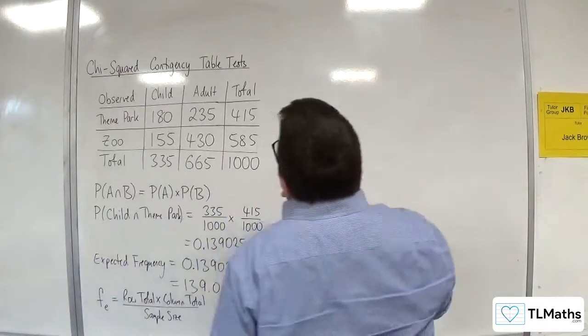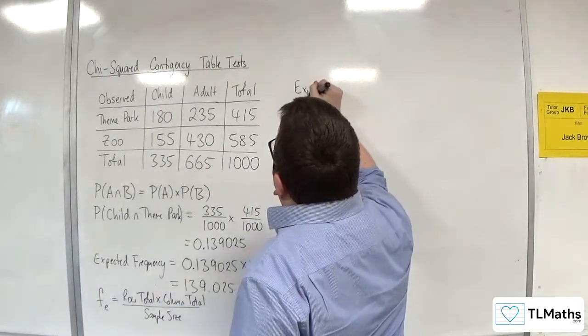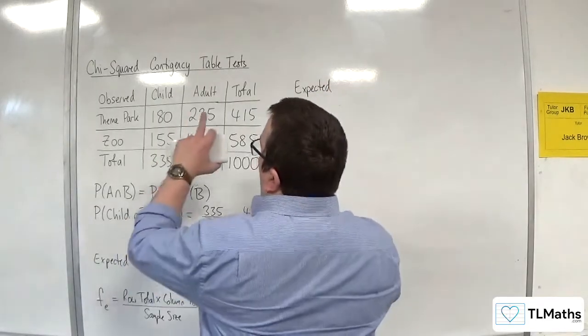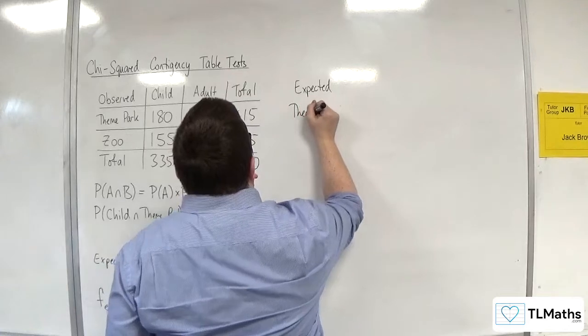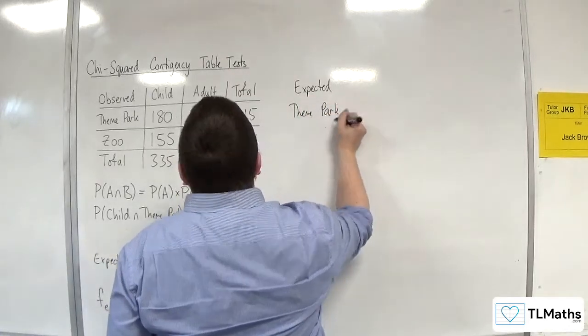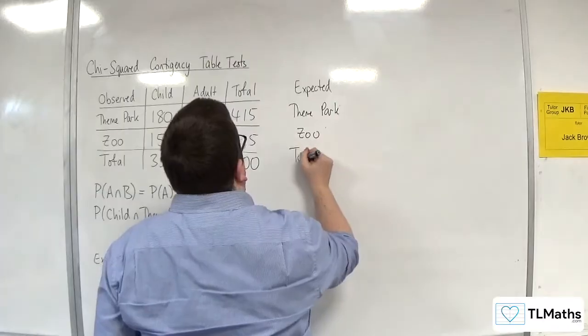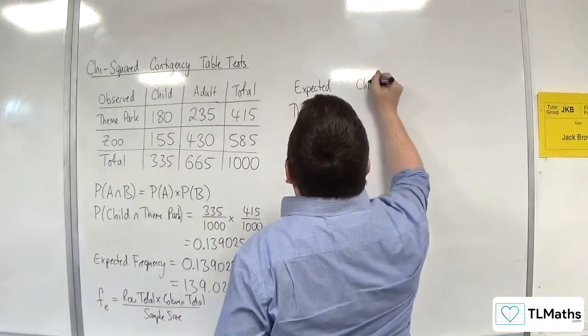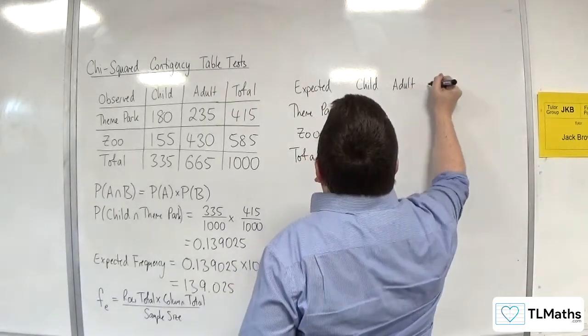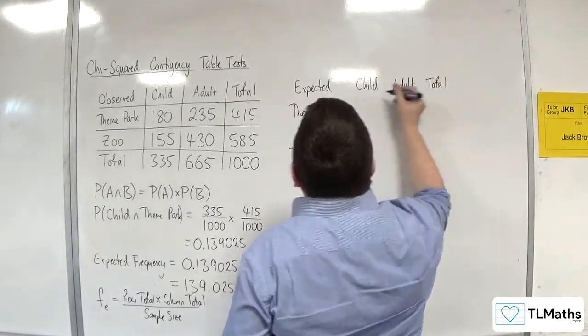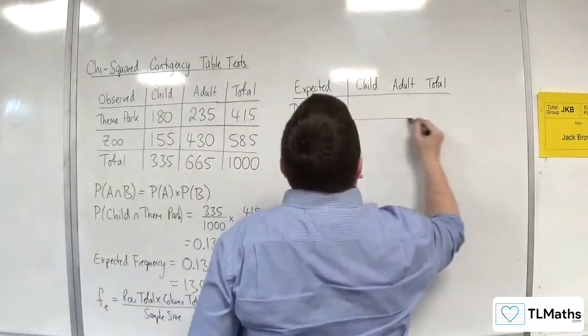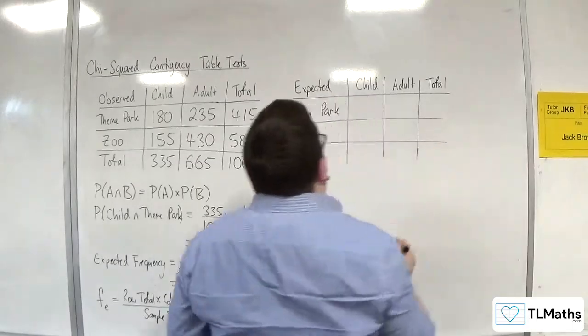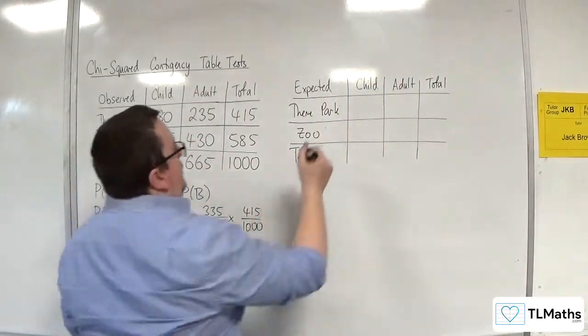So what we're going to do is we're going to build up a new table of expected frequencies. So we've got the observed frequencies, and this will be the expected frequencies. We've got total, and we're going to have child, adult, and total. So we've just worked out that one, 139.025.